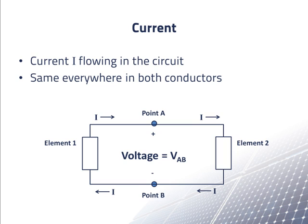The current must be the same at all points in the lower conductor, or else charge would accumulate. And of course, the current out of component 2 must be equal to the current into component 2.